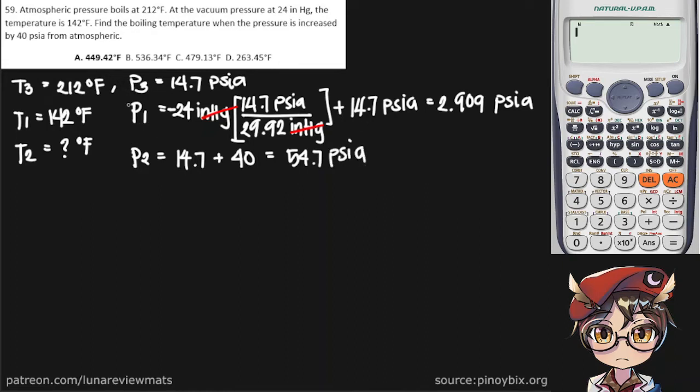Notice that this is actually an interpolation problem, and we can make a table out of this to make our lives easier. Let's say our first column is temperature and our second column is pressure.